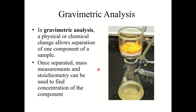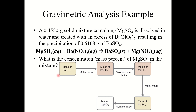Our second type is gravimetric analysis. In gravimetric analysis, a physical or chemical change allows separation of one component of a sample; mass measurements and stoichiometry then find the concentration of that component. In this example, a 0.4550 g solid mixture contains magnesium sulfate. We dissolve it in water and treat it with excess barium nitrate, which results in the precipitation of 0.6168 g of barium sulfate. The goal is to find the mass percent of MgSO₄ in the mixture.